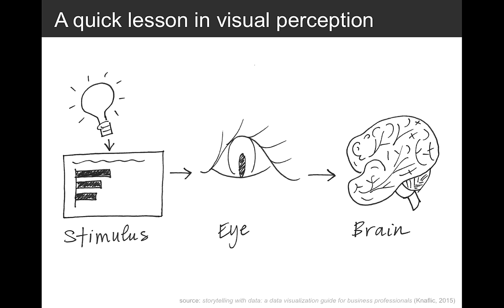Let's kick this off with how color can grab our attention. I'll start by talking briefly about how people see. On the left we have light refracting off a stimulus, captured by our eyes — but it's what happens in the brain that we think of as visual perception. In the brain, there are a few types of memory important for communicating with data. We'll focus on iconic memory, which is super short-term — shorter than short-term memory — and is tuned to a specific set of what we call pre-attentive attributes, which are huge tools in our visual design tool belt.